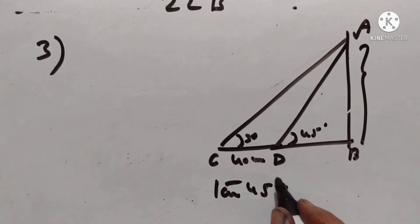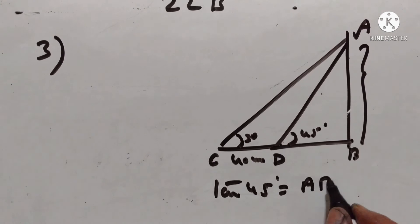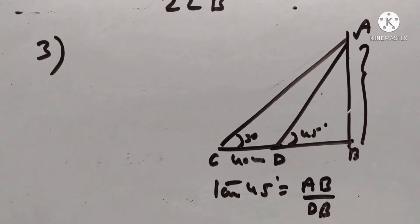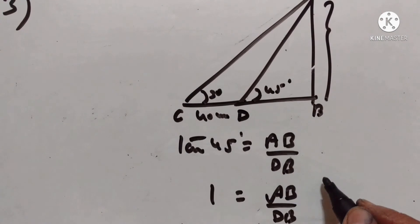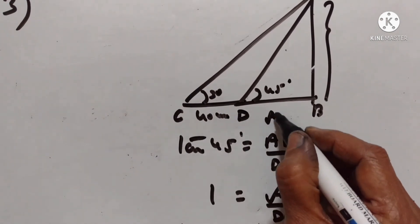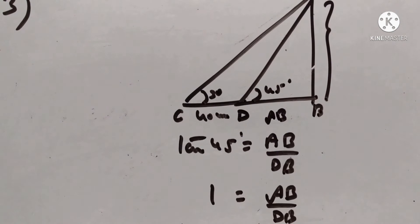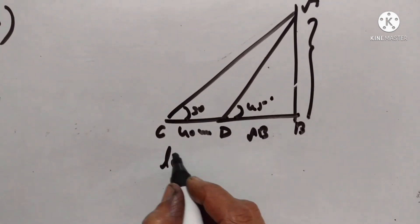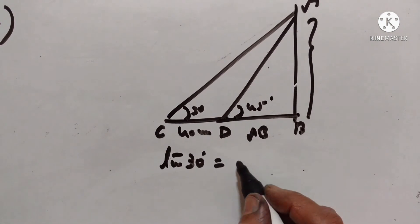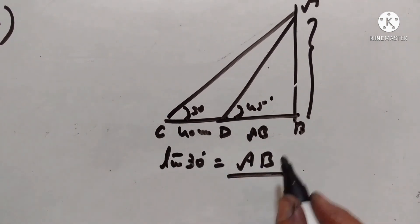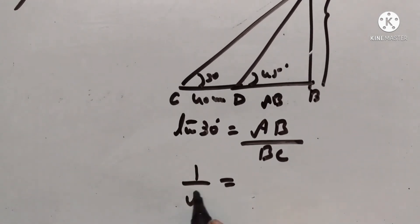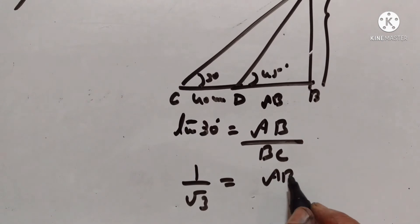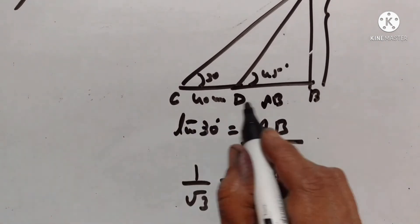Tan 45 is equal to AB upon DB. Tan 45 is equal to 1, therefore DB is equal to AB. Tan 30 is equal to AB upon BC. Tan 30 is equal to 1 upon square root of 3. The height of the building AB upon BC is equal to 40 plus AB.